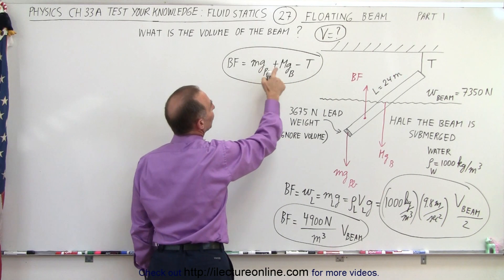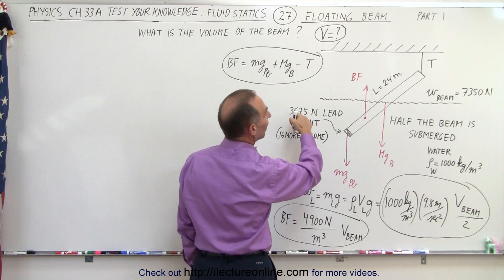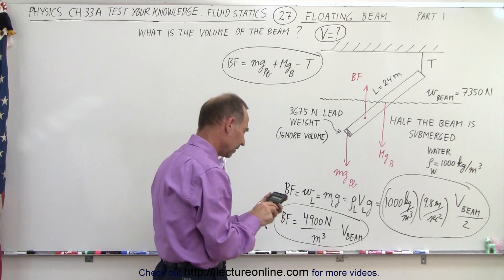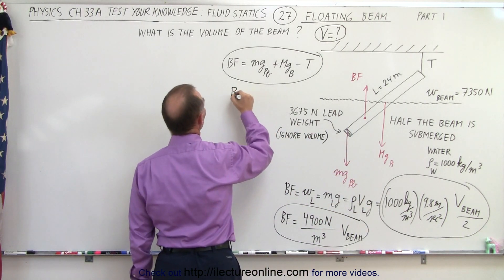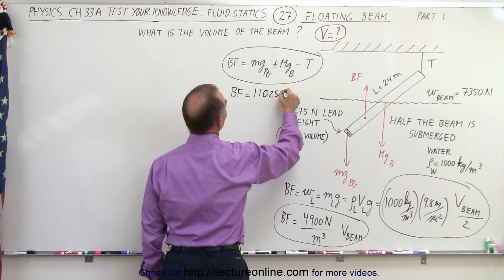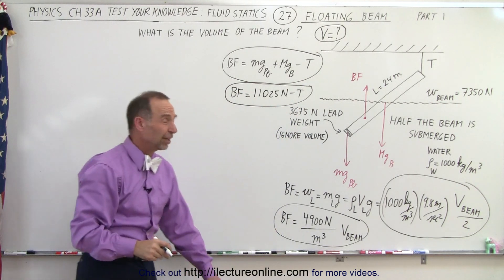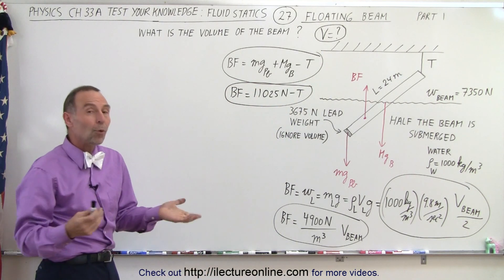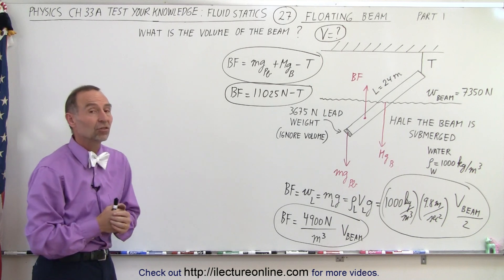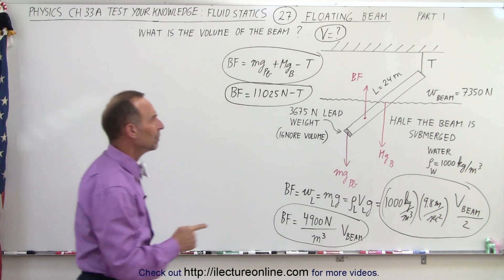We know the weight of the lead and the weight of the beam, and combining those gives us 11,025 Newtons. So the buoyancy force equals 11,025 Newtons minus the tension. We now have the buoyancy force in terms of the tension and in terms of the volume of the beam, but there's no way to calculate either the volume of the beam or the tension in the string. So we need to eliminate one of the unknowns — we need to eliminate the tension.